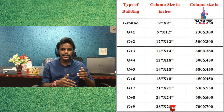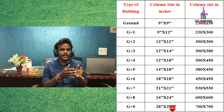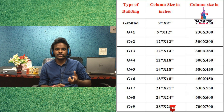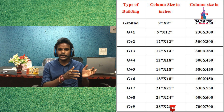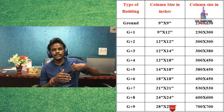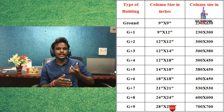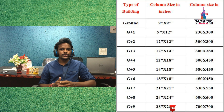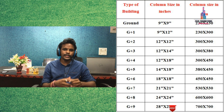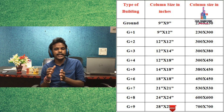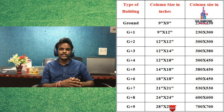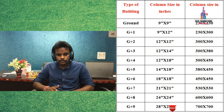For a G+3 building with a penthouse, we need a minimum size of 12 inches cross 14 inches at the ground story. For the first and second story, 12 inches cross 12 inches is sufficient. For the penthouse itself, 9 inches cross 9 inches is adequate. For a G+4 building, the column size is 12 inches cross 18 inches, approximately equal to 300 mm cross 380 mm.